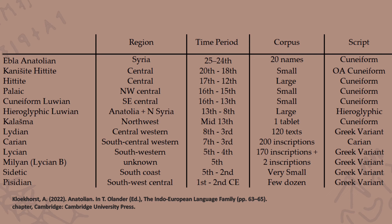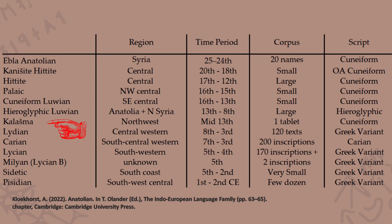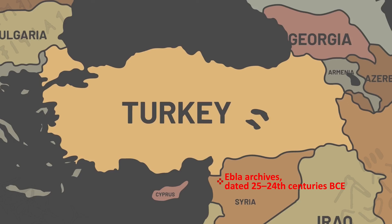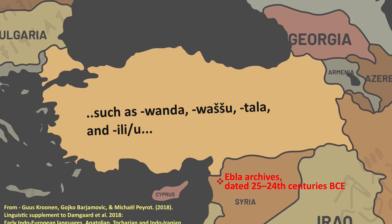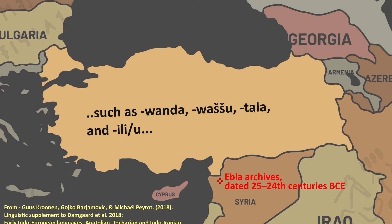I've made two key changes to the data presented in the chapter by Kloekhorst. First, I've added information about Kalašma, the new Anatolian Indo-European language discovered in the archives of Hattusa. Second, I've included what I've termed Ebla Anatolian. Ebla Anatolian is acknowledged by Kloekhorst in his chapter, but he doesn't cover it explicitly, citing a lack of research. Basically, Ebla Anatolian is a collection of 20 names found in the Ebla archives in Syria, a few centuries before our earliest attestation of an Anatolian language. Linguists have noticed that these names have rather suspicious Anatolian forms, and some researchers speculate they could be the earliest attested form of an Anatolian language.